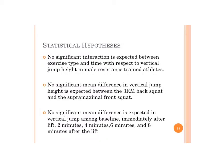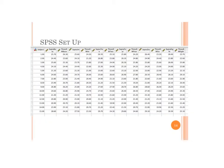There are three statistical hypotheses — one for each F-test. Starting with the interaction: no significant interaction between exercise type and time with respect to vertical jump. Then the backup main effect hypotheses: no significant mean difference in vertical jump height between 3RM back squat and super-maximal (exercise type), and no significant mean difference in vertical jump across the five time periods (time).